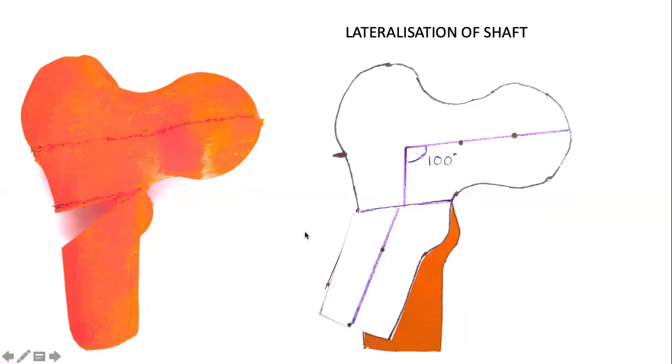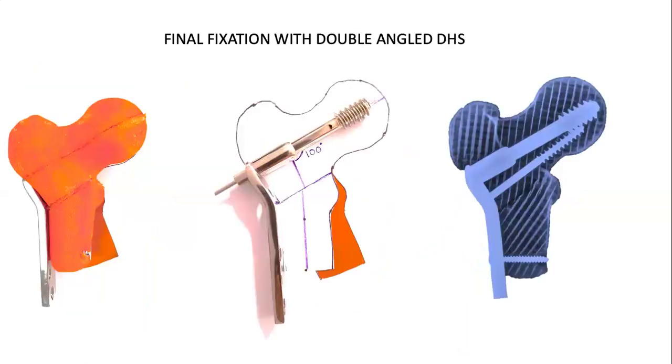So once the wedge is removed, you close the osteotomy and this is what gives you the correction. So here is a final fixation with a double angle barrel plate where you can see the osteotomy closes at the second angle of the double angle plate. And this gives you a correction of around 125 degrees. So the resultant neck shaft angle is 125 degrees.